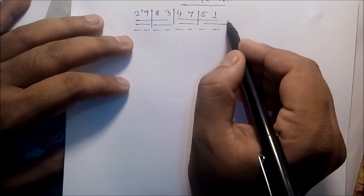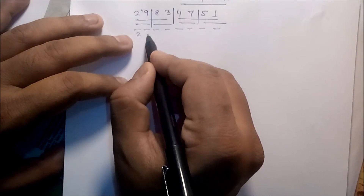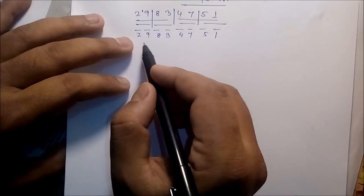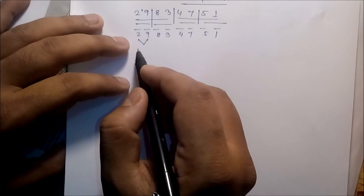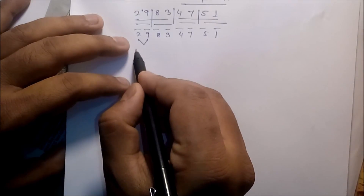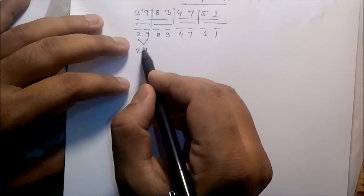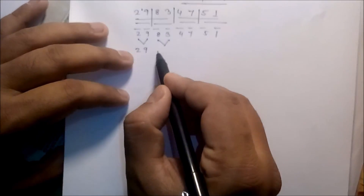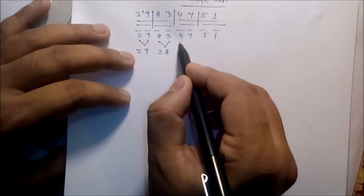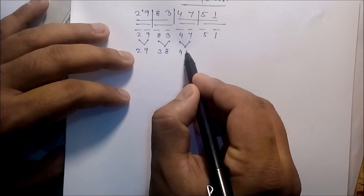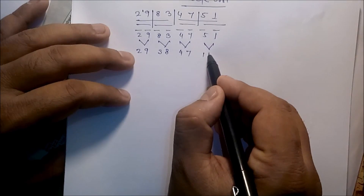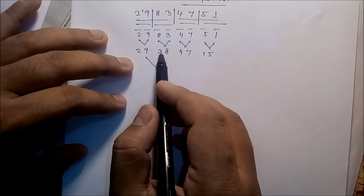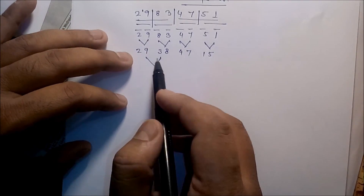The division is complete. We have: 2, 9, 8, 3, 4, 7, 5, 1. Now we begin merging. After merging the data in sorted order: 2 and 9 are already in sorted order, so they remain 2, 9. Then we get 3 and 8, then 4 and 7, and 1 and 5. Next we merge these pairs — this is merging two sorted datasets.